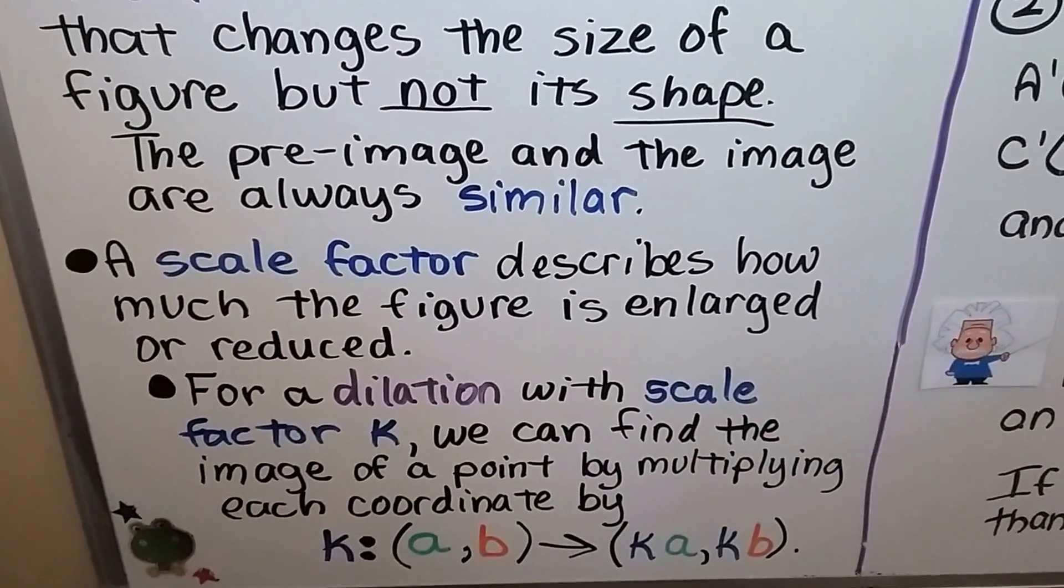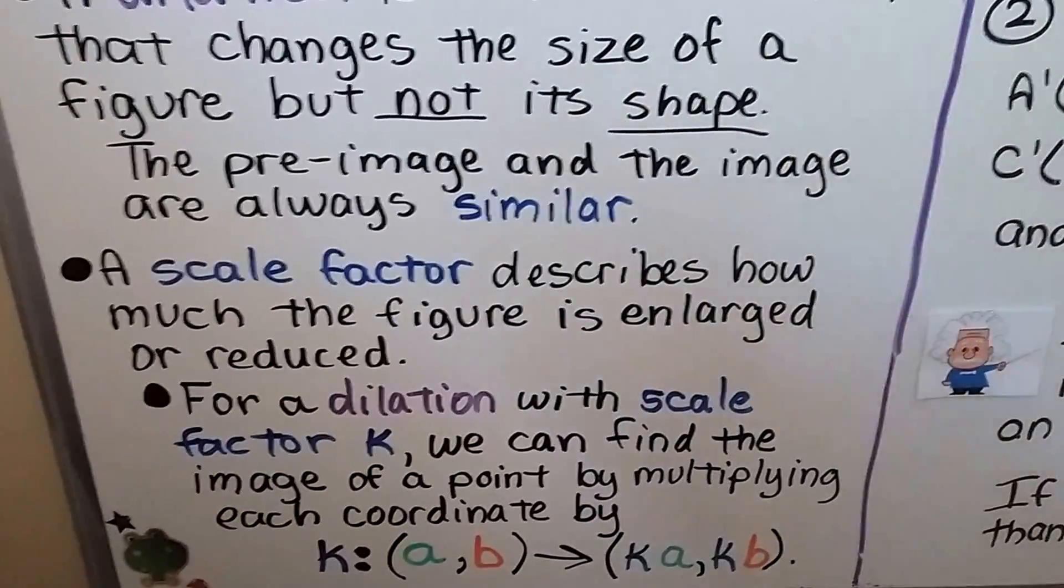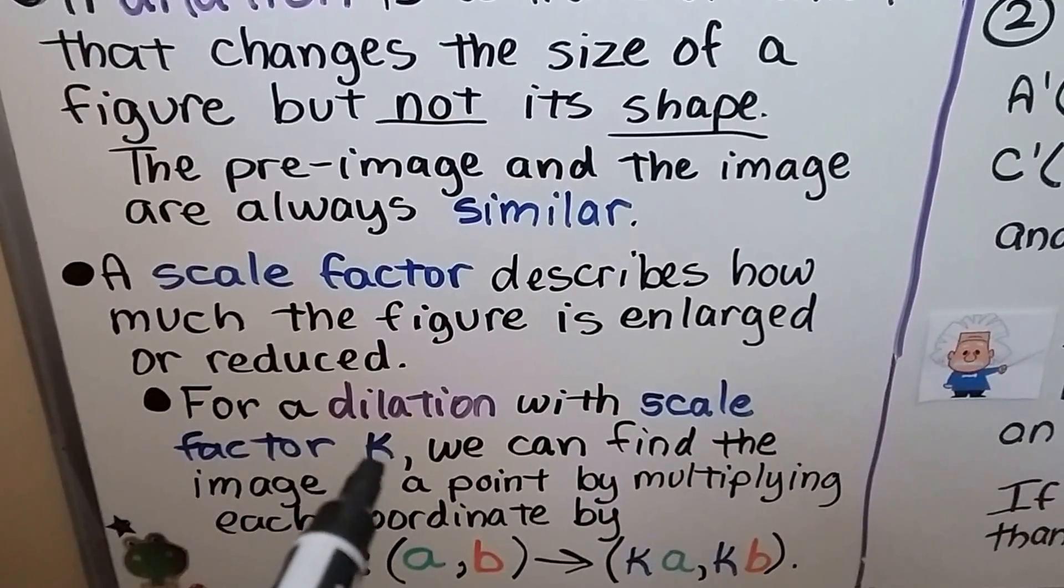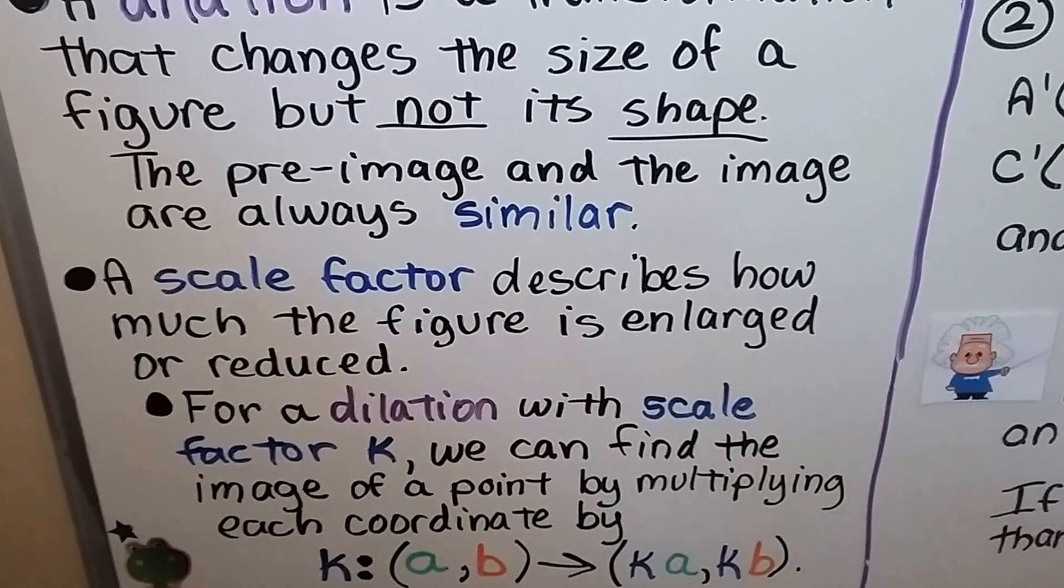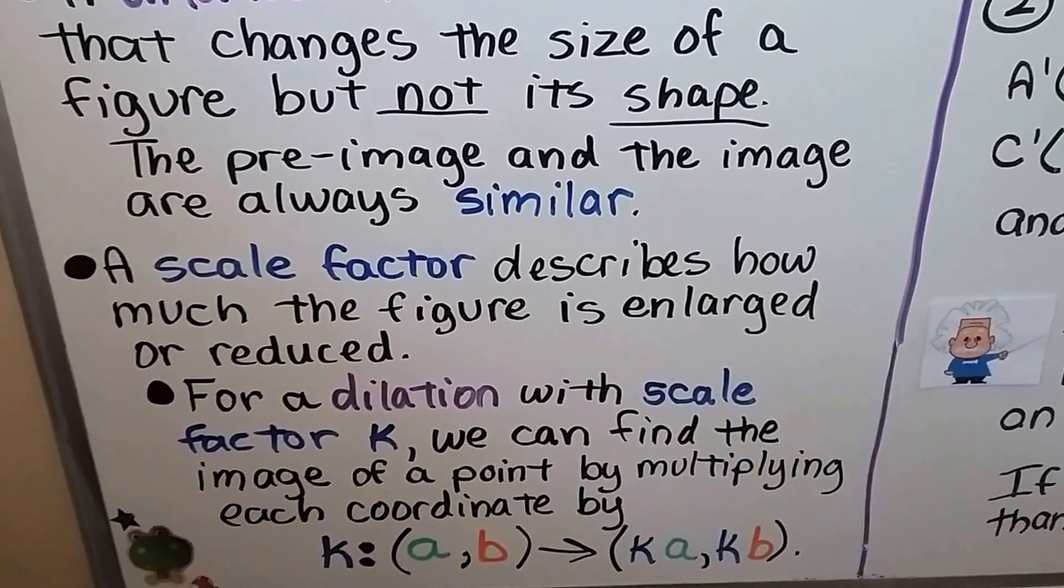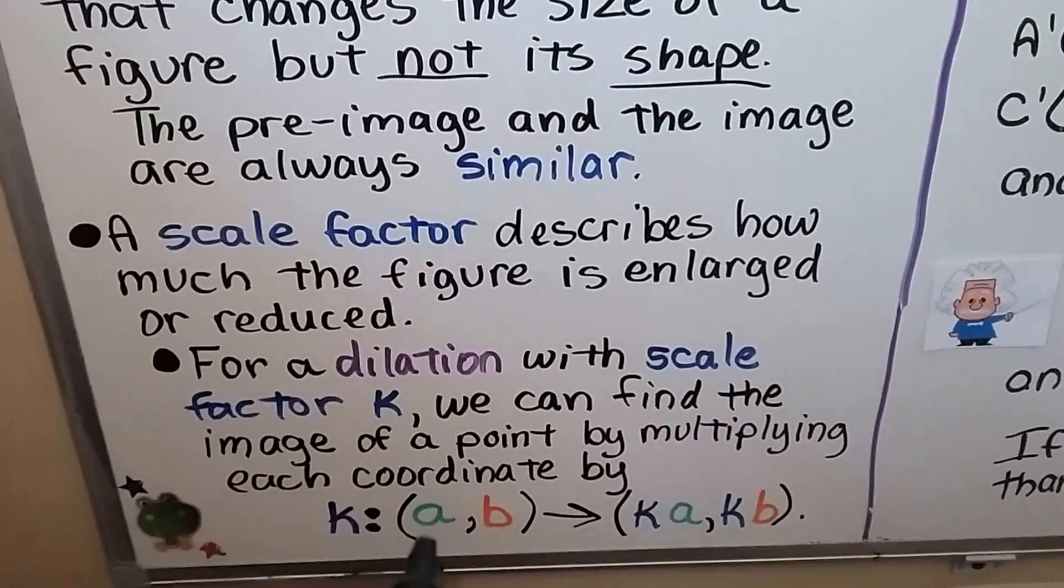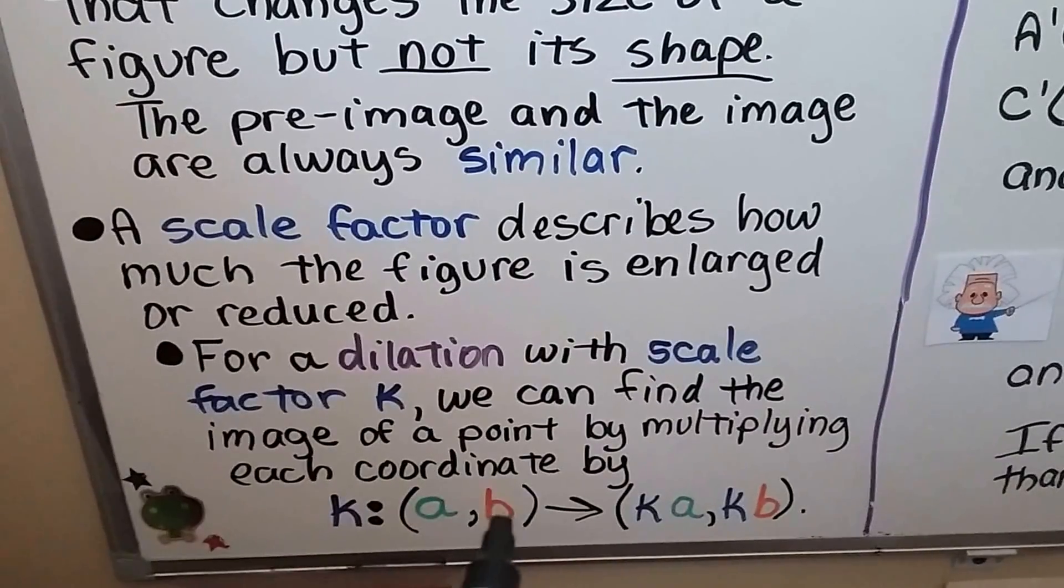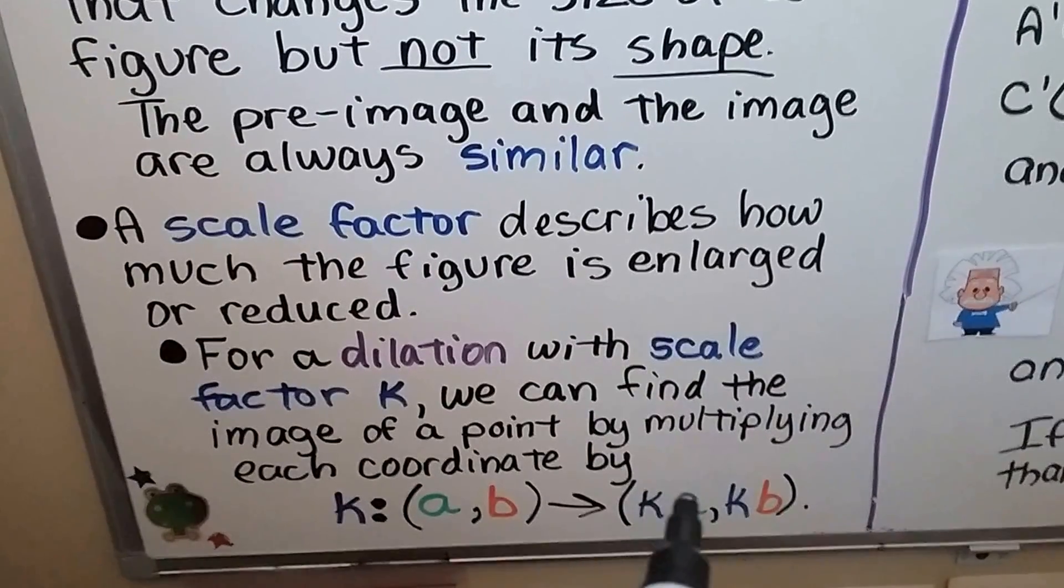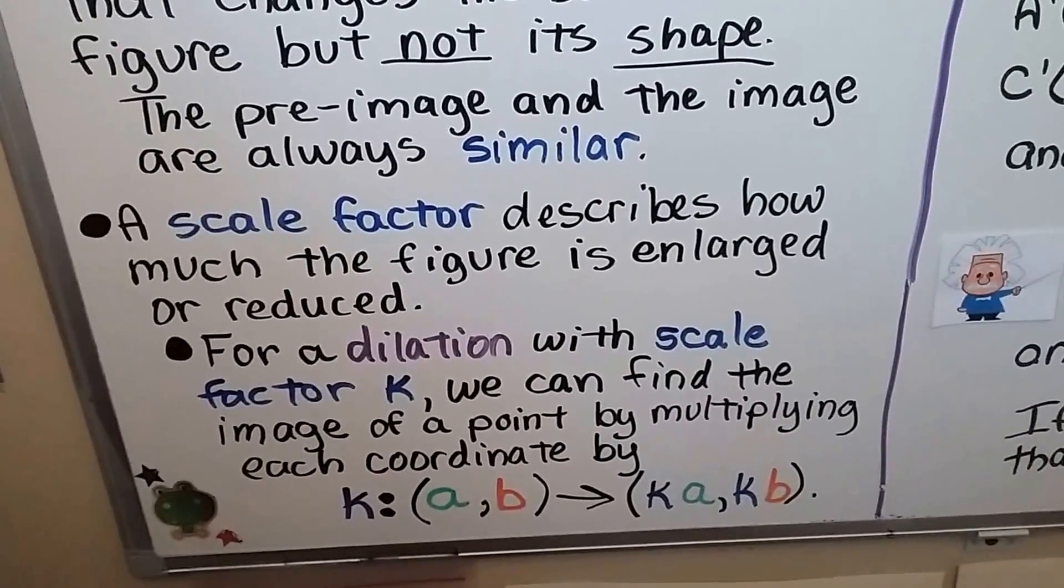A scale factor describes how much the figure is enlarged or reduced. For a dilation with scale factor K, we can find the image of a point by multiplying each coordinate by that K. For X and Y values are AB, we would do K times A and K times B.